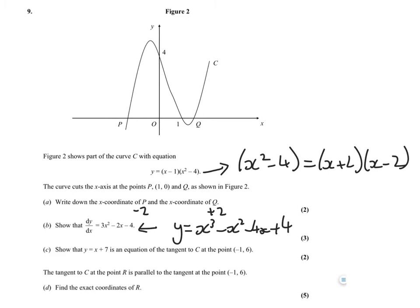Show that Y equals X plus 7 is an equation of a tangent to C at point minus 1, 6. What we've got to do is put in, if you put in negative 1 into your differential here, your gradient function, you find that the gradient is 1. And then you're going to be doing your Y minus 6 equals 1 brackets X plus 1. Multiply all that out, you should end up with this here.